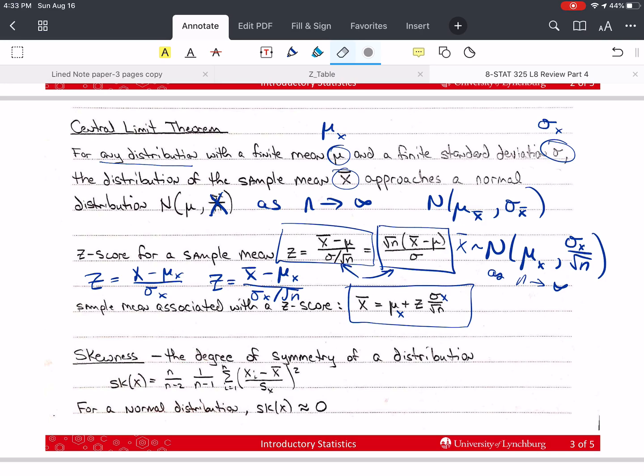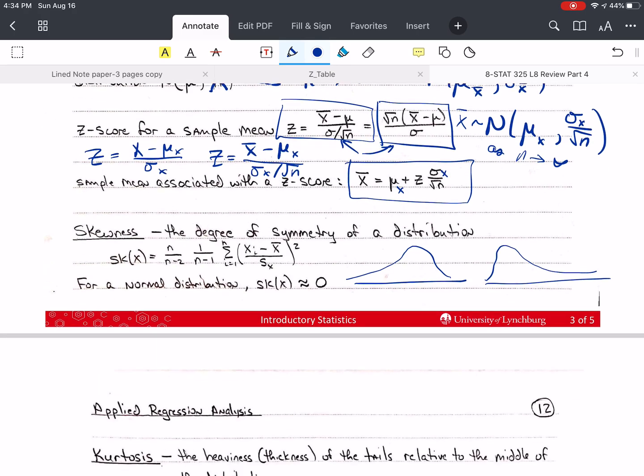A negative skew would look like this, and a positive skew would look like this.